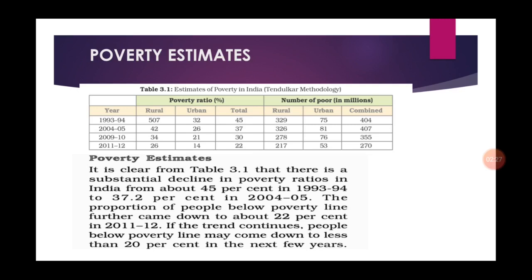People should have minimum income to fulfill their basic requirements. If they are able to fulfill those requirements, they are not poor. If people do not have the minimum income to fulfill their basic requirements, they are considered as poor.